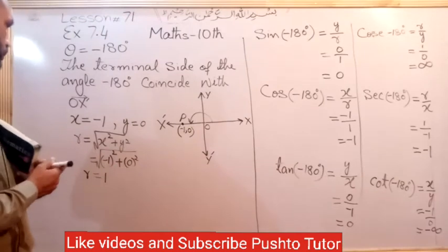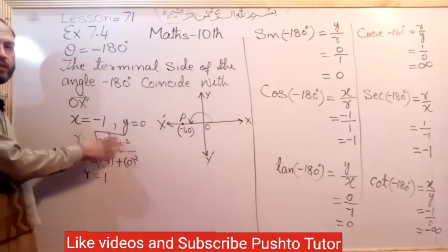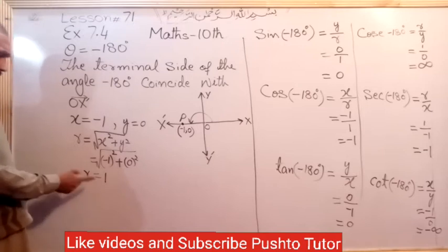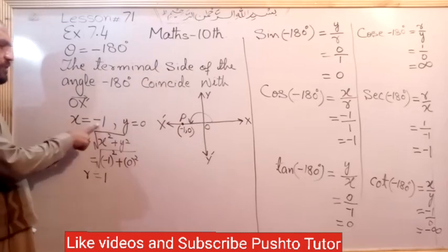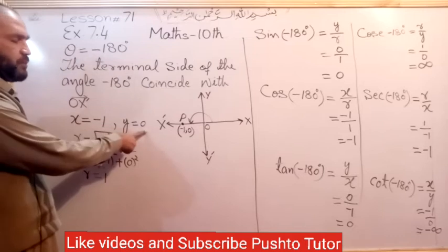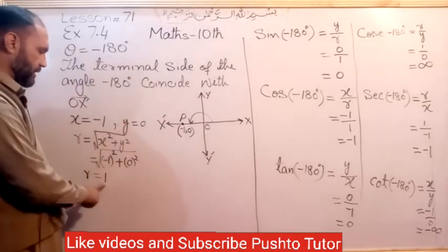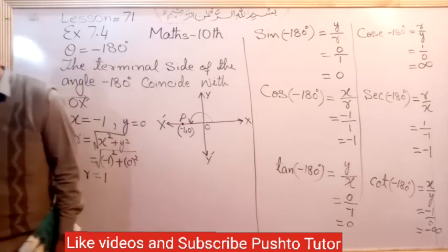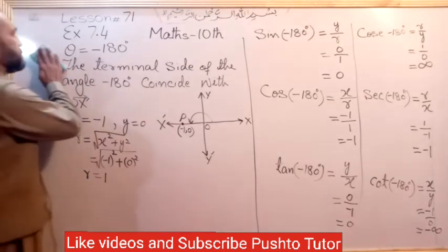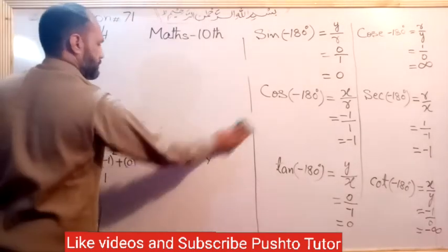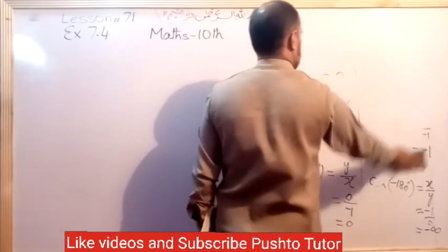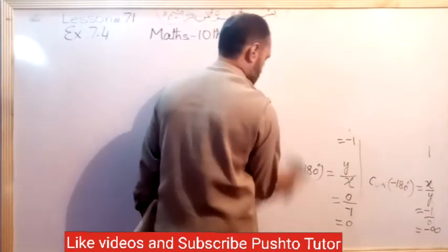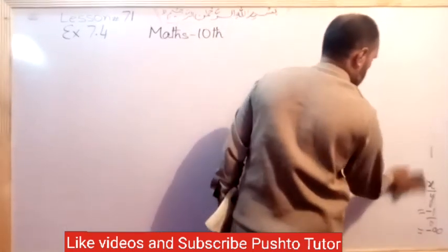For all trigonometric ratios, R equals 1. The R value calculation: when the x value is plus 1 or minus 1 and the y value is 0, then R equals 1.